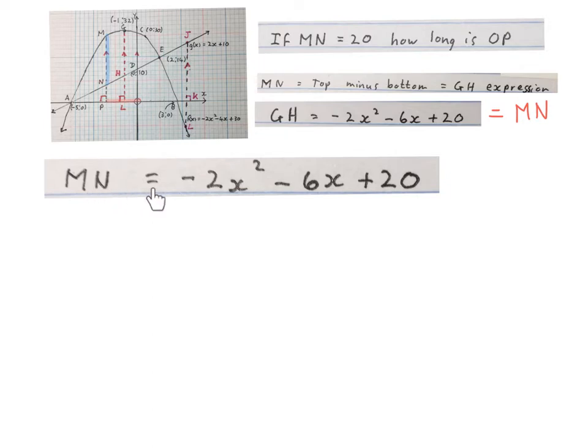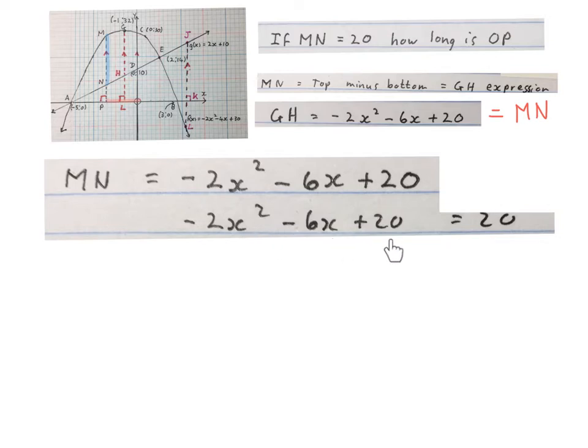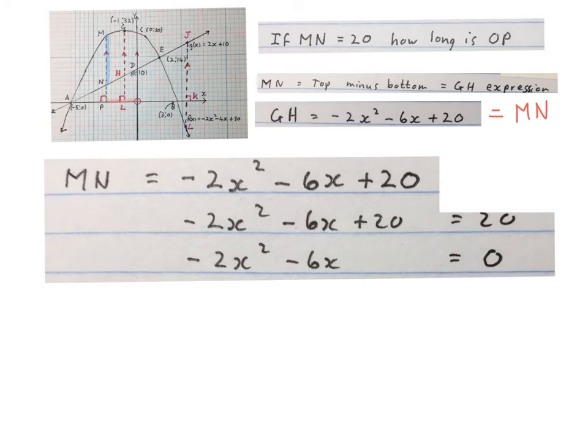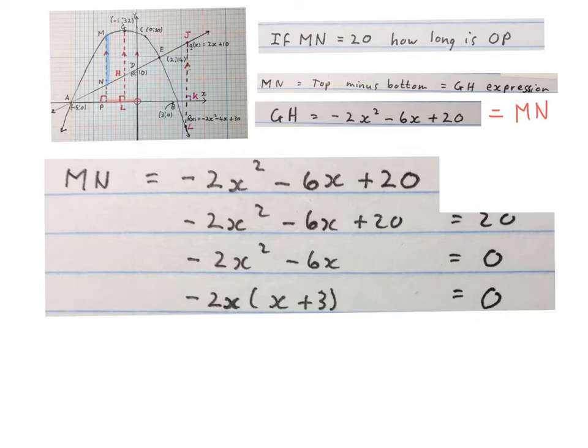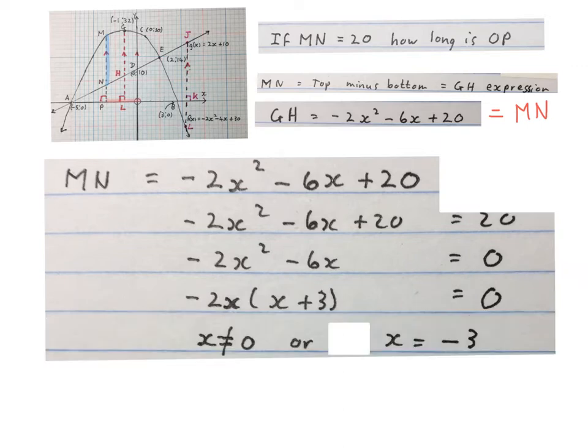We can say MN equals this expression equals 20 units. Then we'll have an equation looking like this, a quadratic equation. Minus 20 on both sides to get zero on that side. Now we solve for x. Factorize. We get two answers: x = 0 or x = -3.